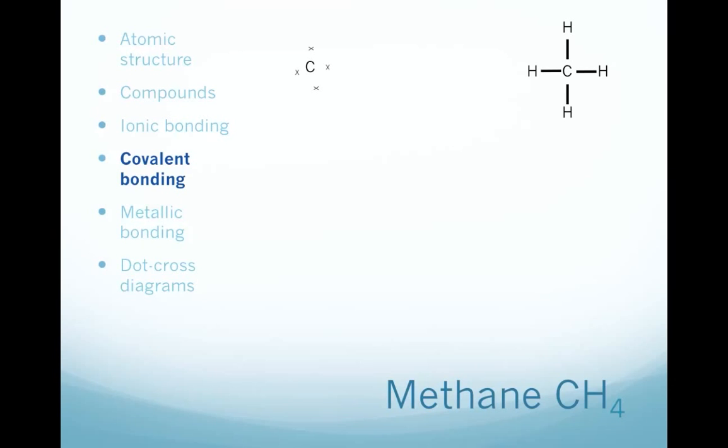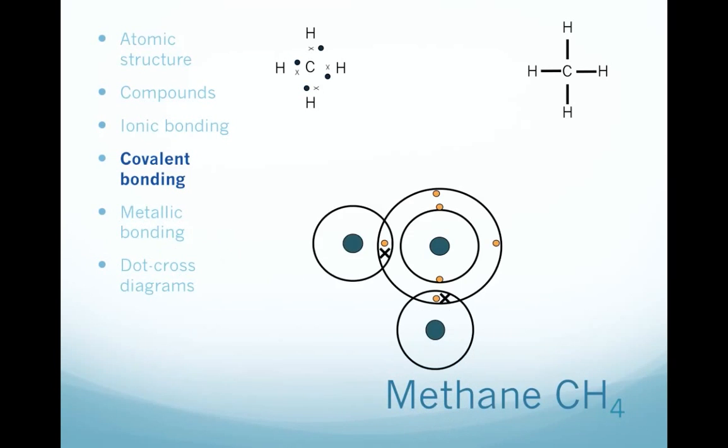So there's the electrons of the carbon atom represented as crosses, and then four hydrogen atoms each bringing in their electron, represented by a dot. So, overall, all the atoms have a complete set of electrons. That's a dot-cross diagram. Or we can draw it in this way, showing the electron shells.